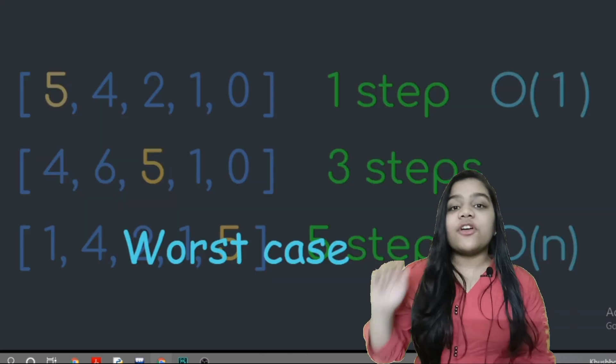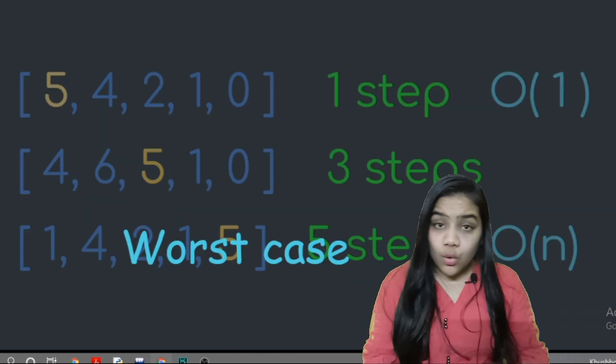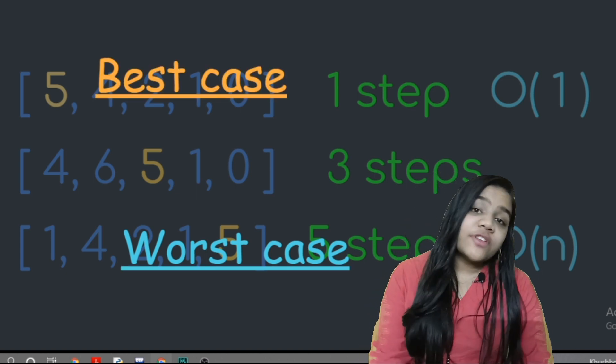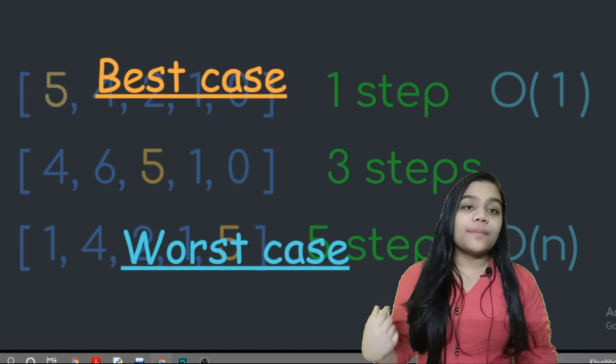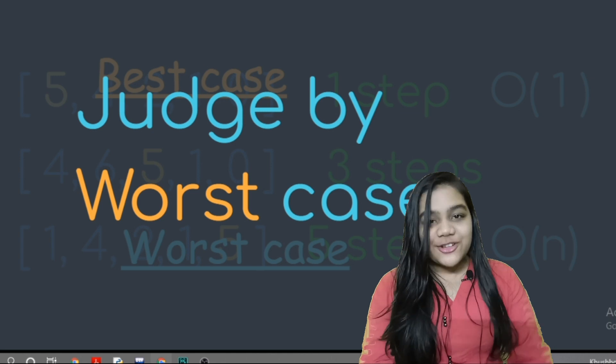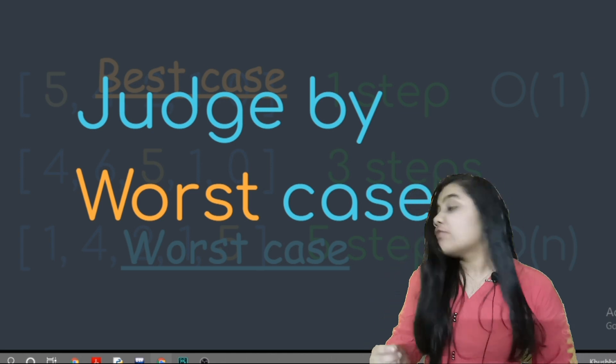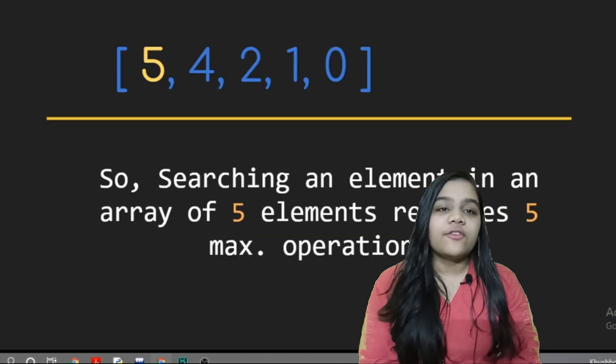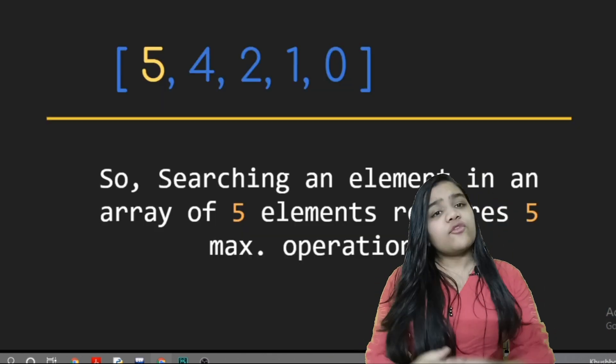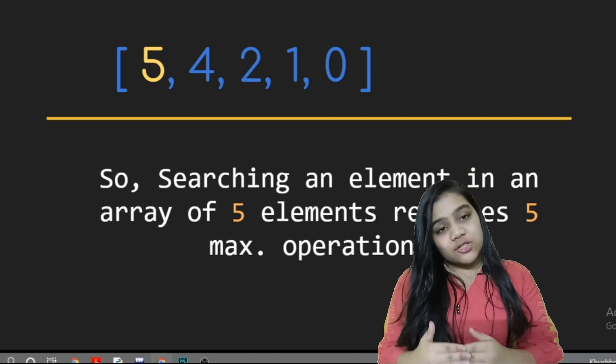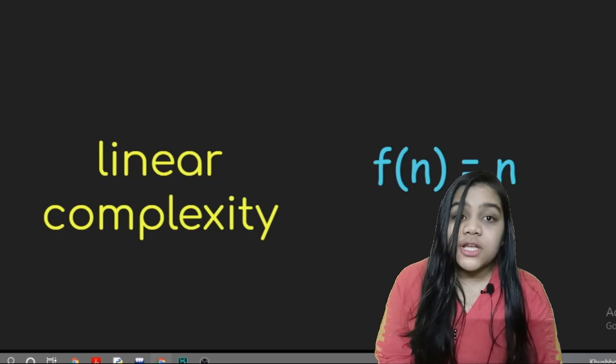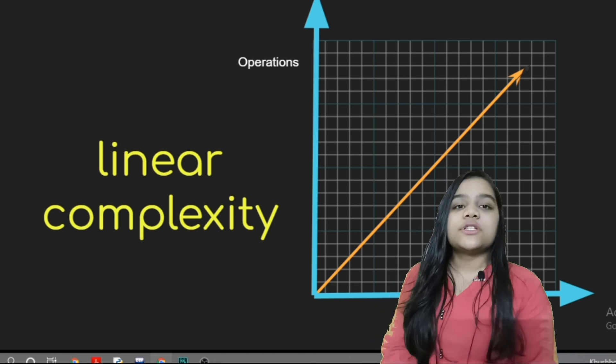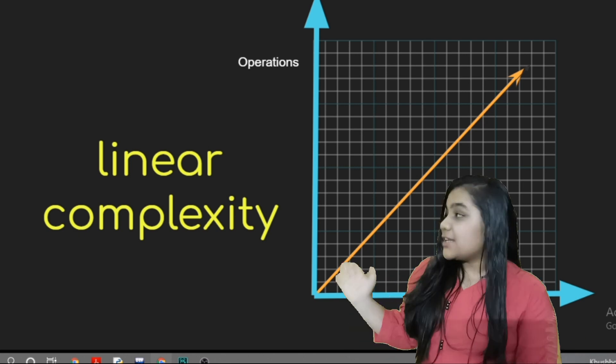And for the last case we have 5 elements and that was the worst case. If we have different cases then how will we judge our algorithm? We judge our algorithm on the basis of worst case complexity. So for the array of 5, it took us 5 steps. For the array of n, the worst case complexity will be n steps. So we can say that it is linearly proportional to the input size. So it is a linear complexity.